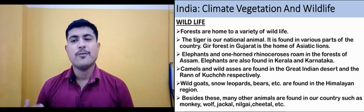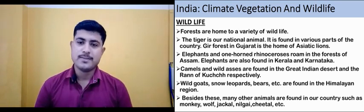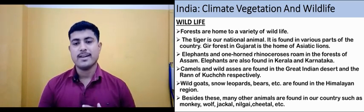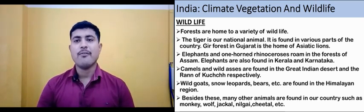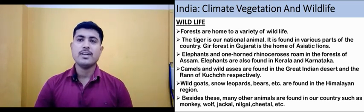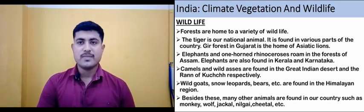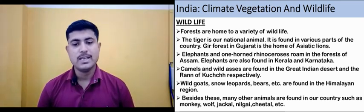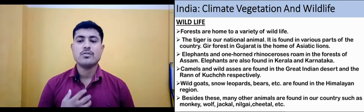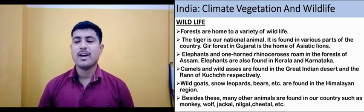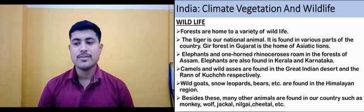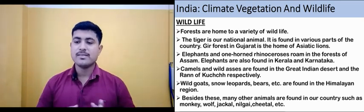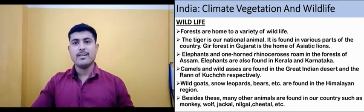Elephants and one-horned rhinoceros roam in the forests of Assam, and elephants are also found in Kerala and Karnataka. Camels and wild asses are found in the Great Indian Desert and the Rann of Kutch respectively. Wild goats, snow leopards, deer, etc. are found in the Himalayan regions.